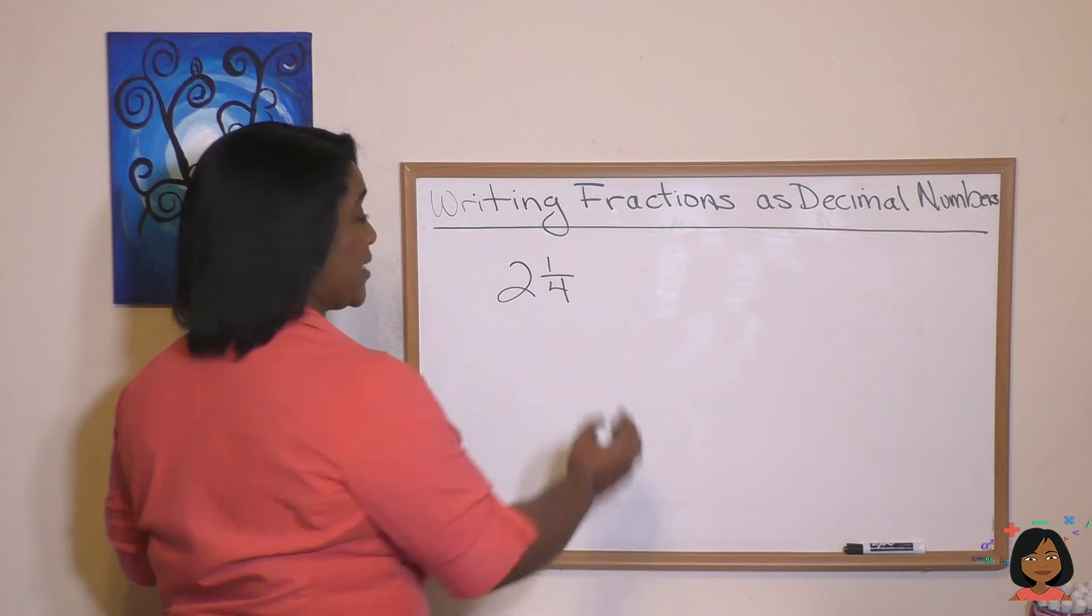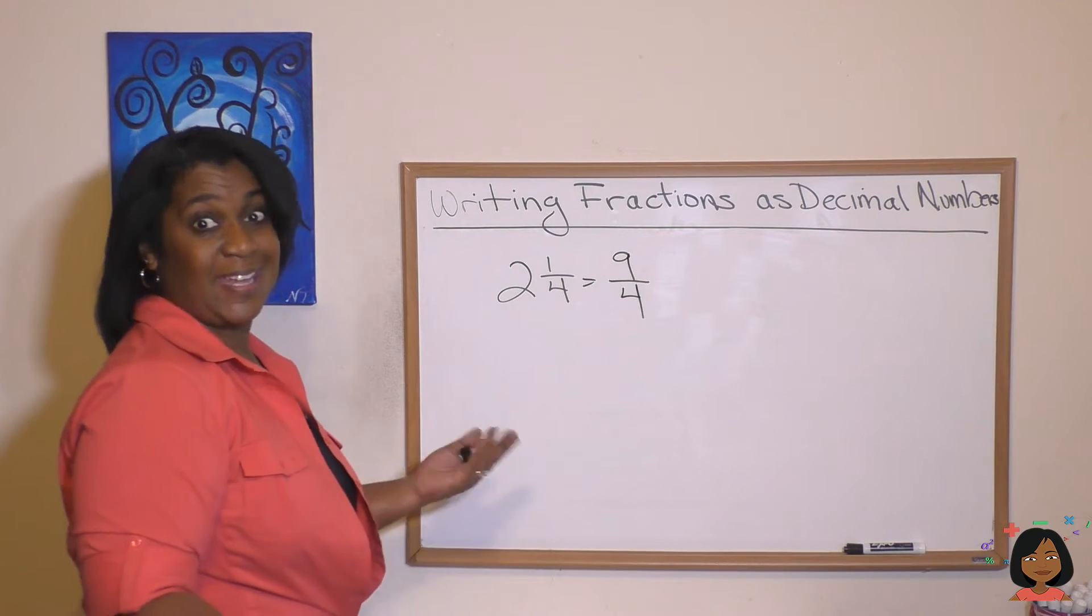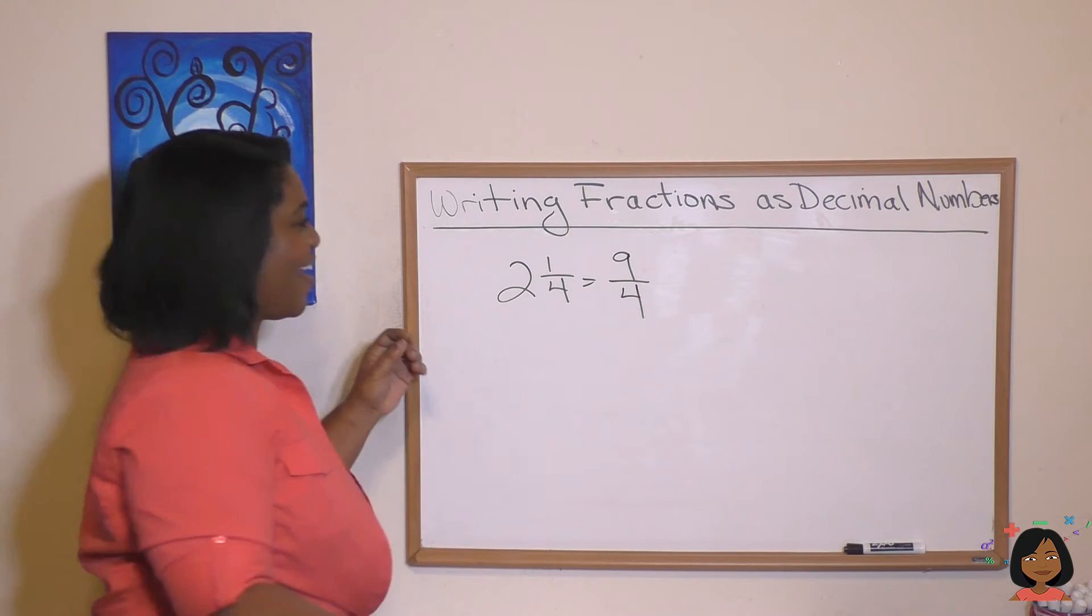4 times 2 is 8, plus 1 is 9. 9 fourths. And now it's just a division problem. So do it.